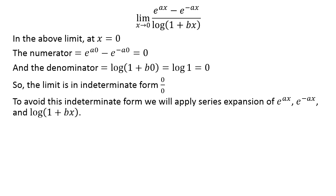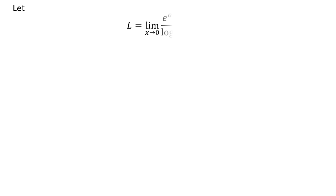We will try to avoid this indeterminate form by substituting exponential of a times x, exponential of minus a times x, and natural log of 1 plus b times x by their expanded series form. Let L be equal to the limit of exponential of a times x minus exponential of minus a times x upon natural log of 1 plus b times x as x approaches 0.